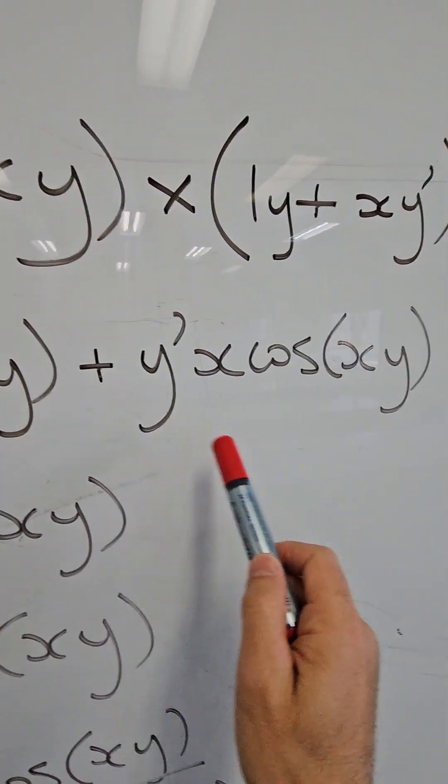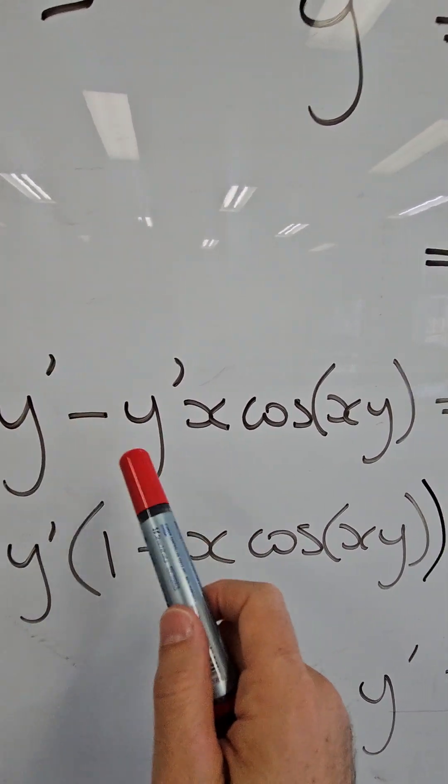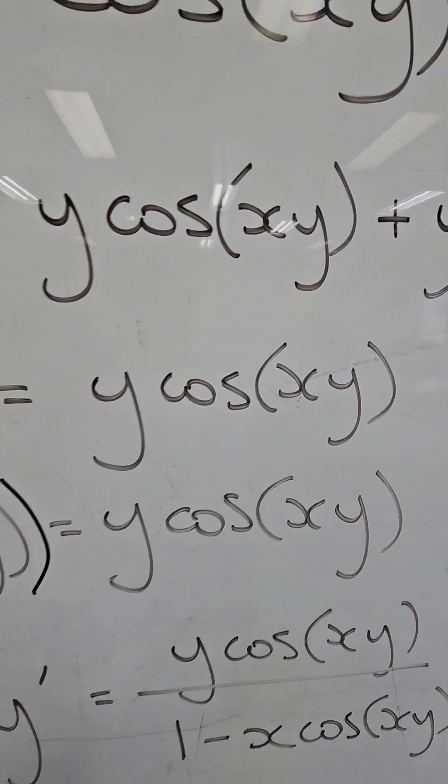Next, take this term here and move it over the left hand side to group the y dashes together, and we get y dash minus y dash x cos xy equals y cos xy.